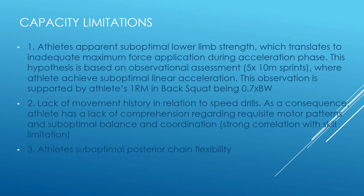This observation is supported by the athlete's one rep max back squat being at 0.7 times his body weight. The second limitation is the athlete's lack of movement history in relation to speed drills, resulting in a lack of comprehension regarding requisite motor patterns and suboptimal balance and coordination. While this could be construed as a skill limitation, the athlete lacks comprehension to such a degree that this limitation is weighted more towards capacity.